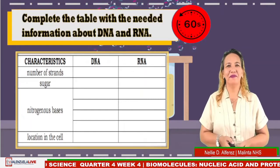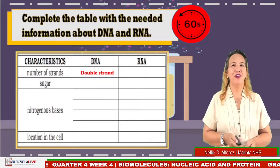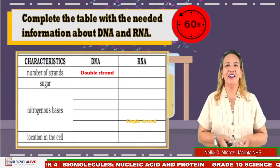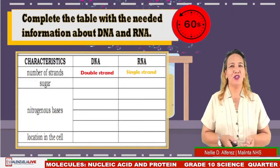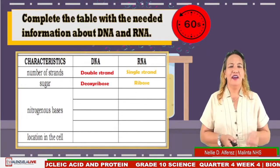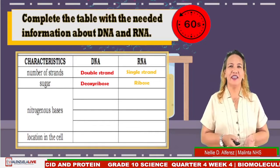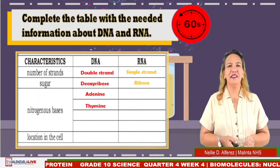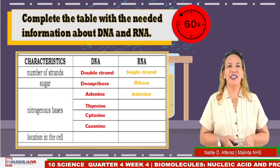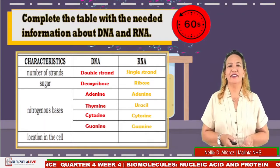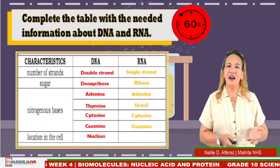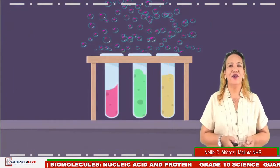Time is up. Let us check your answers. For number one, the number of strands: DNA has a double strand, RNA has a single strand. For the sugar: DNA has deoxyribose, RNA has ribose. For the bases: DNA has adenine, thymine, cytosine, and guanine; while RNA has adenine, uracil, cytosine, and guanine. For the location in the cell: DNA is in the nucleus, and RNA is in the cytoplasm. Good job, students!